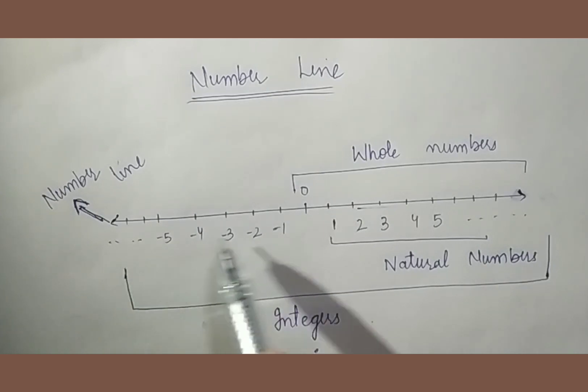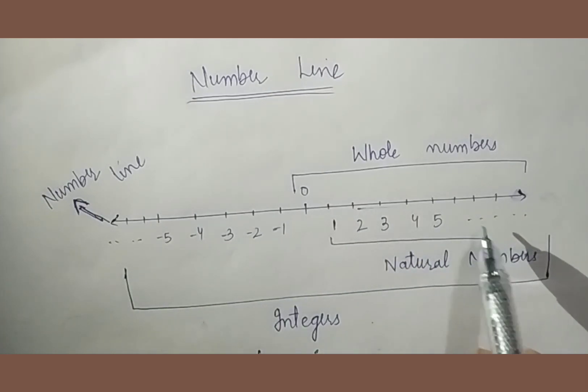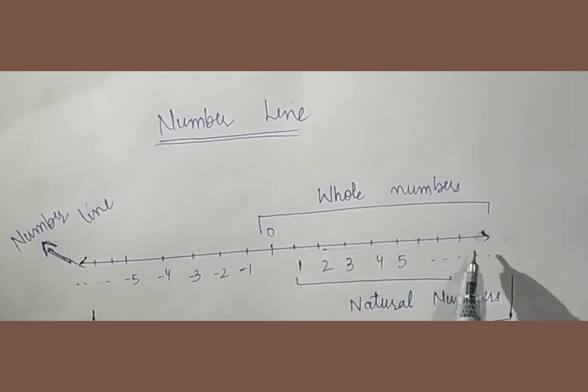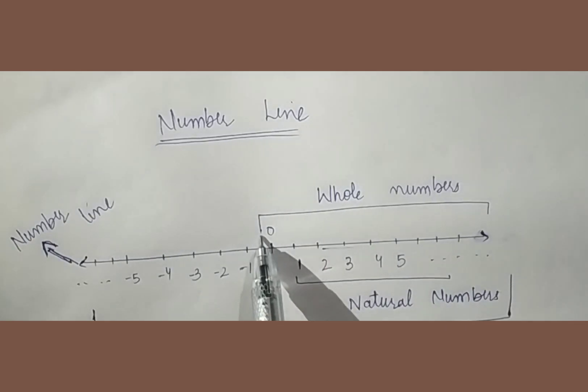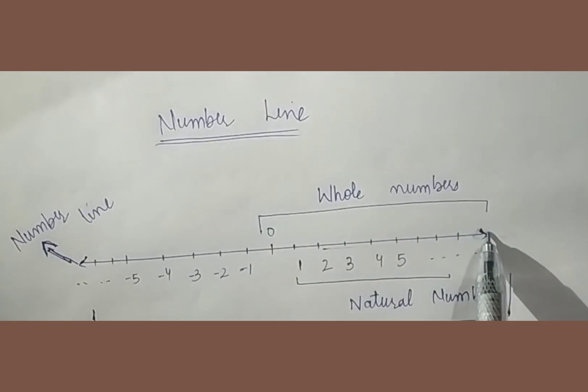And the number which includes both negative numbers, positive numbers, as well as 0 is known as integers. This is my first number line. The number 1 starts, we call natural numbers, and the number 0 starts, we call whole numbers.